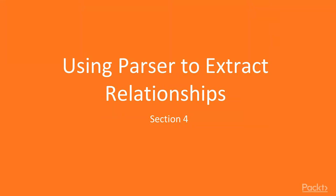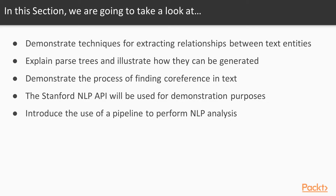Section 4: Using a parser to extract relationships. In this section, we'll demonstrate various techniques for extracting relationships between text entities, or essentially the words of the text. We'll use parse trees to see how these elements relate to each other, and we'll see how we can actually generate parse trees using APIs.